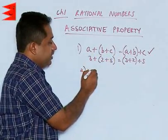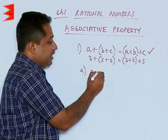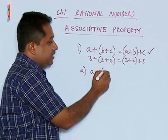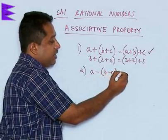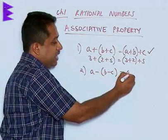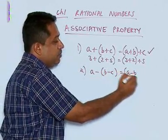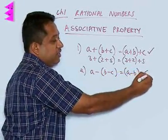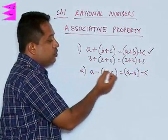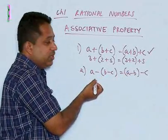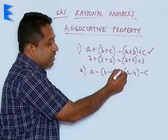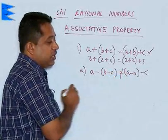In case of subtraction, we find that (A minus B) minus C is not the same as A minus (B minus C). If you substitute relevant values of A, B, C, you will find that they are not equal.